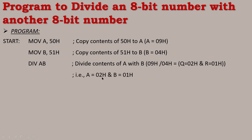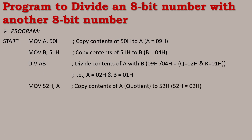After DIV AB executes, A is equal to 02H — that means 02H is stored in register A, so A holds the quotient. B is equal to 01H, so register B holds the remainder. This instruction will execute. Next instruction: MOV 52H, A.